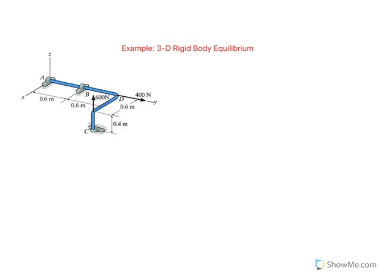Here we have an example of a three-dimensional rigid body problem. As you can see, this bent pipe is being held or supported by bearings at A, B, and C.